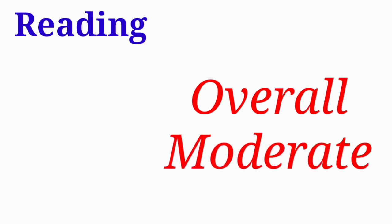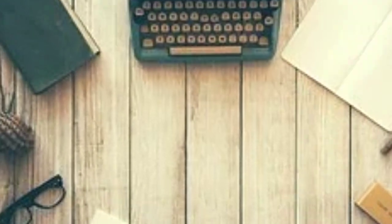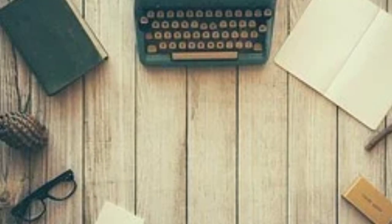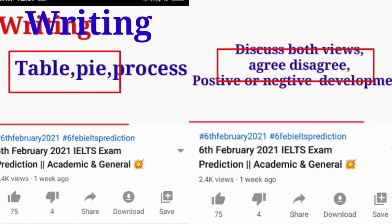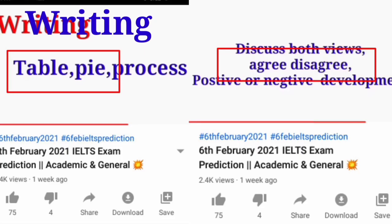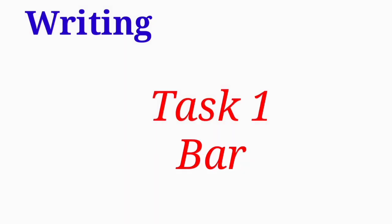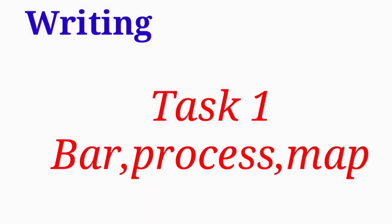For Writing Task 2, we have made predictions covered in separate videos — you can find the links in the description box. For Task 1, out of our three predictions, one came in the morning session and one in the evening session. You need to prepare bar chart, process diagram, and map for Task 1.